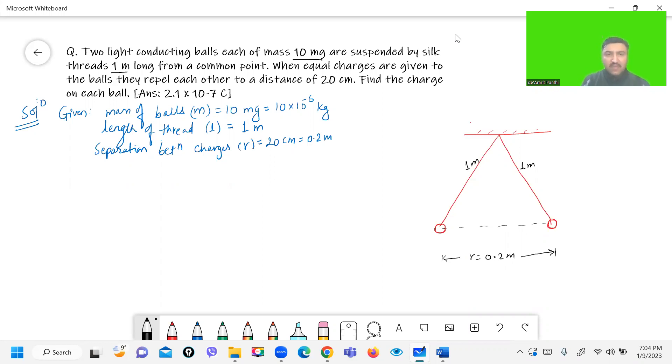So the given parameters are: mass of balls m equals 10 mg which will be equal to 10 into 10 to the power minus 6 kg, length of thread L equals 1 meter, and separation between charges R equals 20 cm.